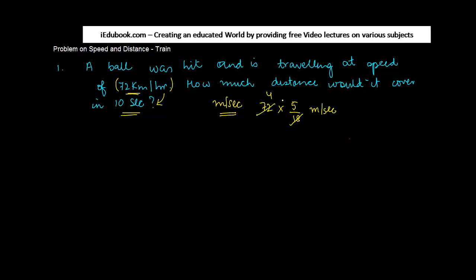18 goes into 72 four times. 4 times 5 will give you 20. So 20 meter per second. This is the distance which the ball covers in 1 second. And how many seconds do we need to find out? We need to find it out for 10 seconds. So 20 into 10 or 200 meters.